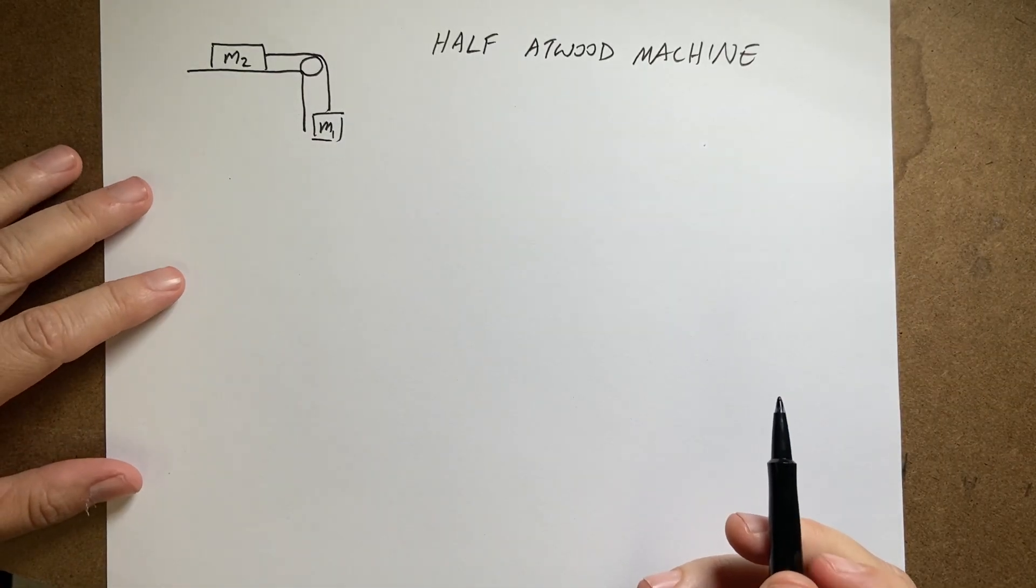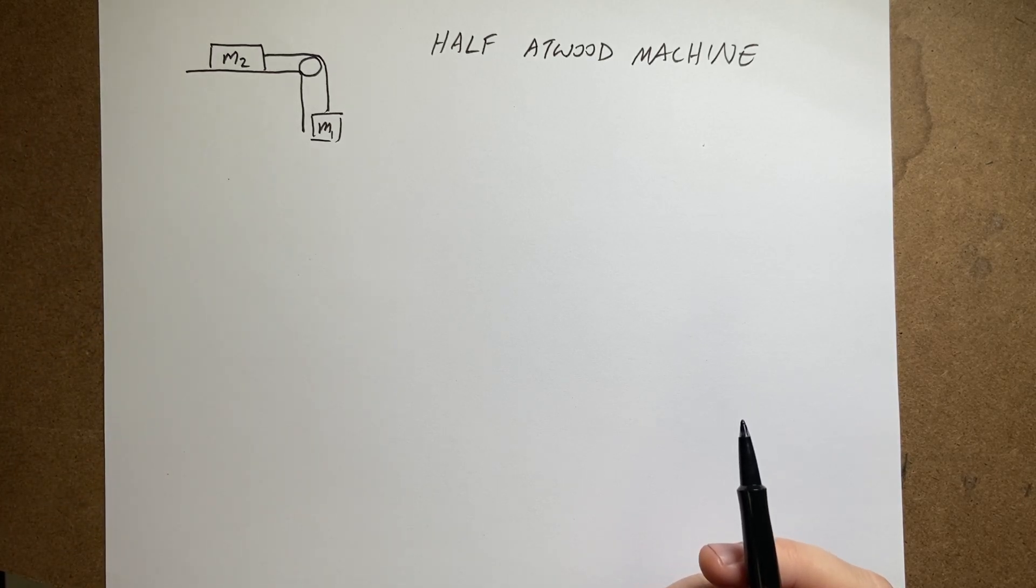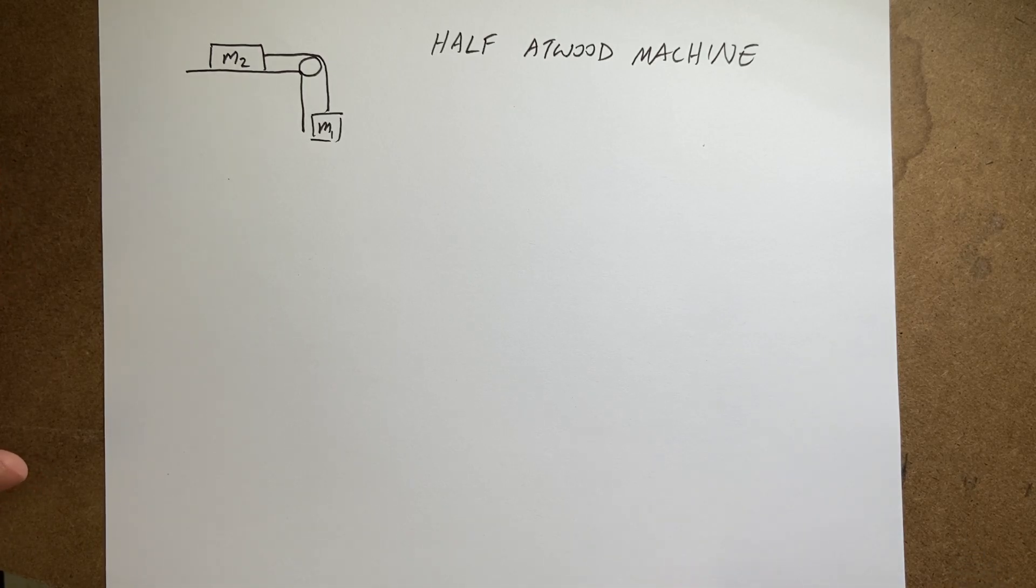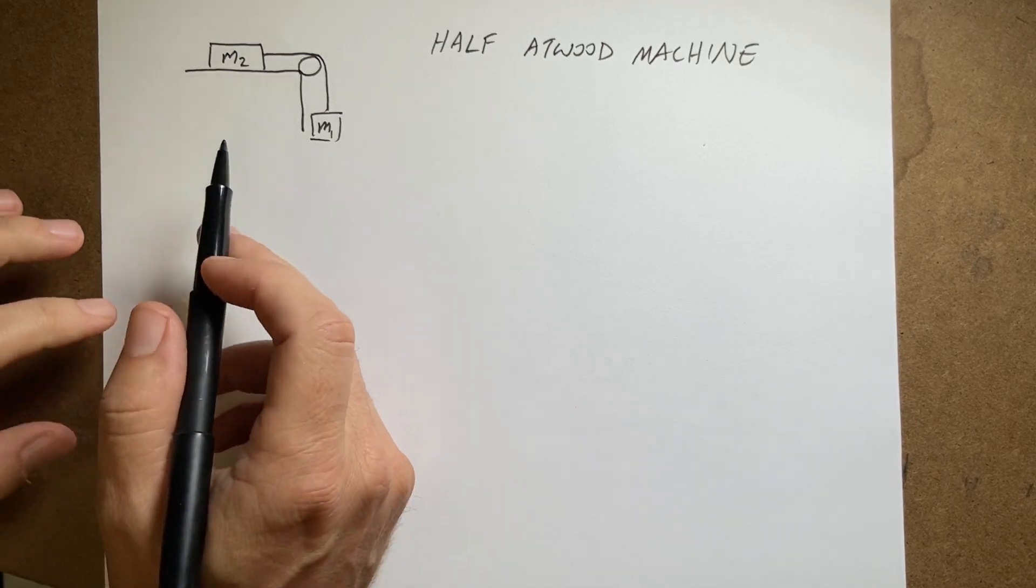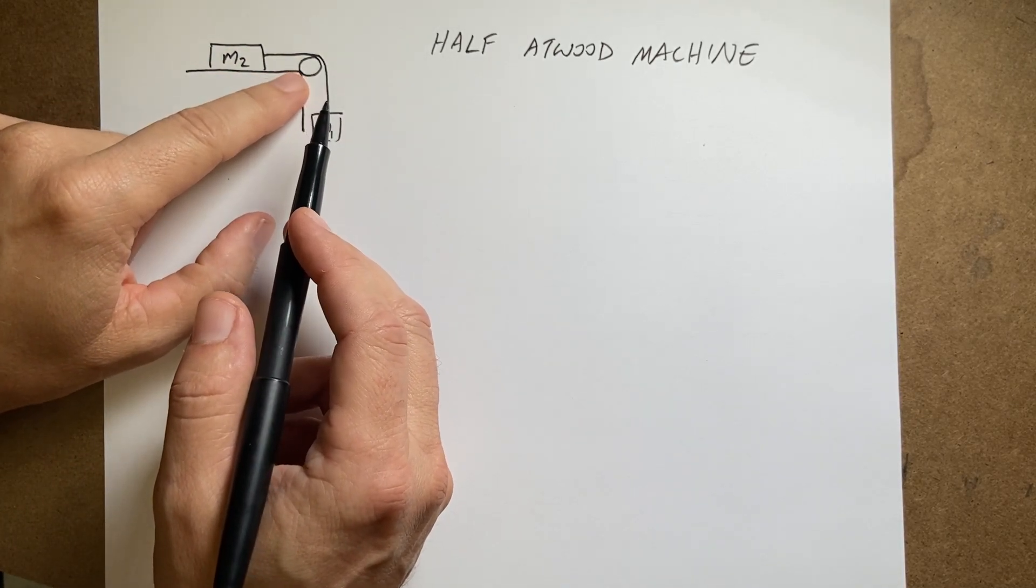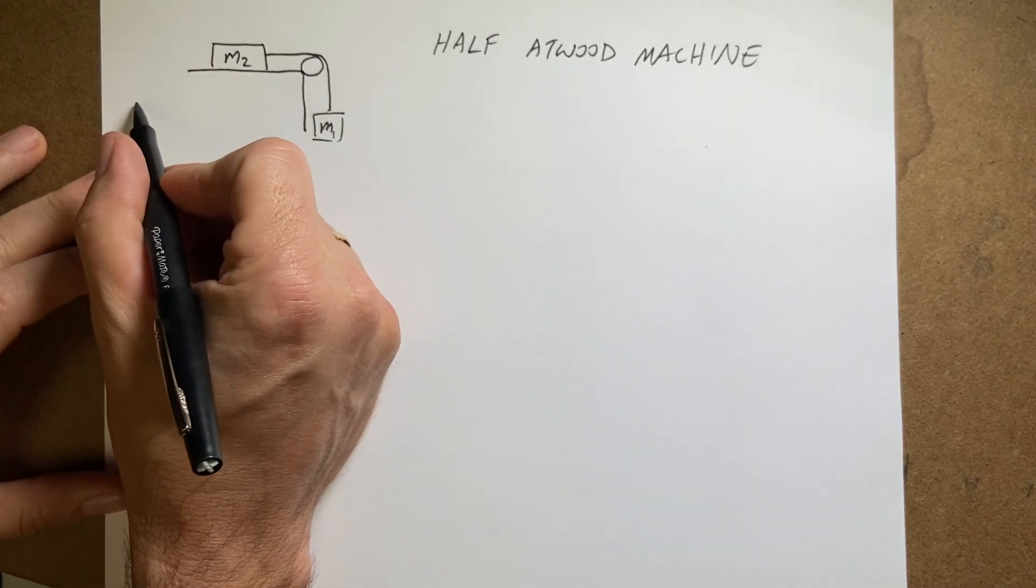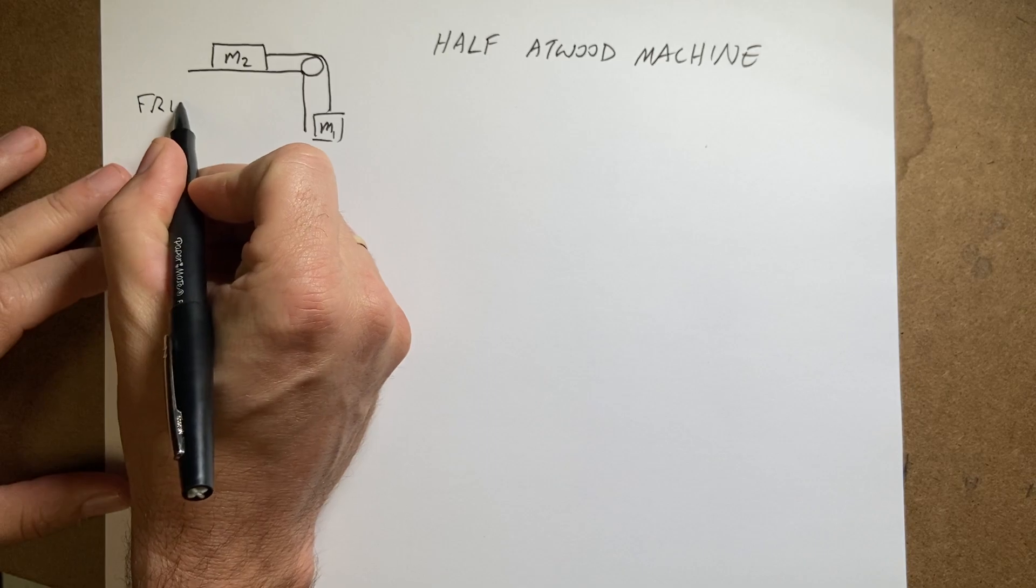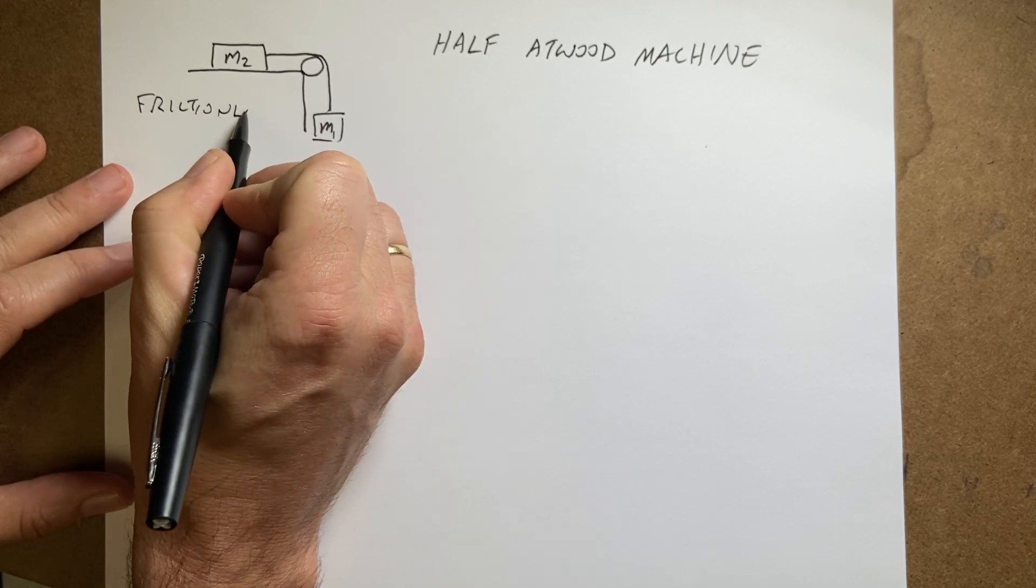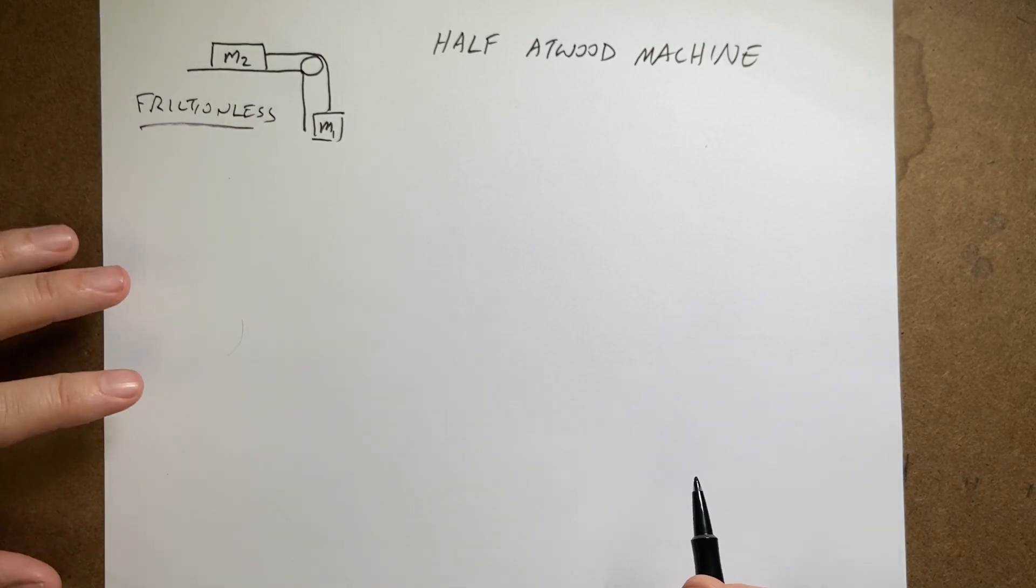Okay, so continuing my series on the Atwood machine. In the previous video I did a normal plain Atwood machine, it's not boring, it's pretty cool. And this is the half-Atwood machine. So the half-Atwood machine has two masses connected by a string over a pulley, but one of the masses is on a table and this is going to be a frictionless table. We'll do friction later. Frictionless. And so let's find out what's happening.